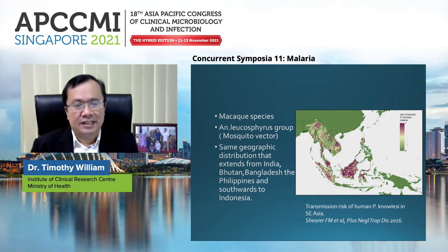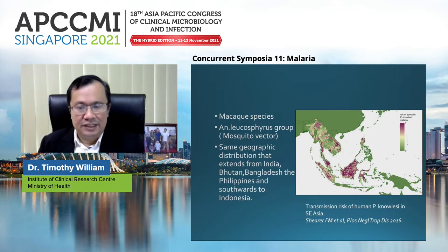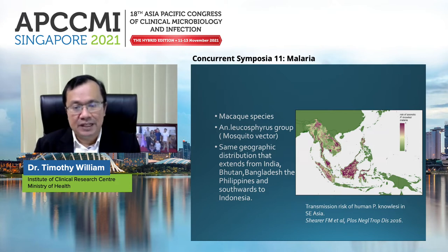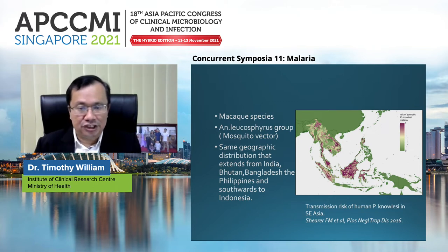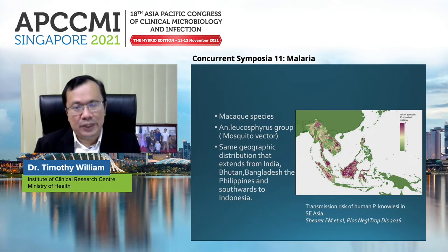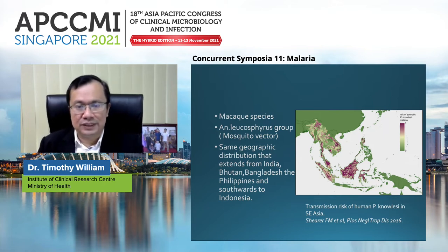This is a paper published by Shearer et al. on the transmission risk of human knowlesi in Southeast Asia. If you look at Malaysia, the peninsula of Malaysia, Borneo, entire Kalimantan, Sumatra, Sulawesi, Thailand, and Cambodia, you can see all the purple markings where the risk of zoonotic Plasmodium knowlesi malaria is very, very high.